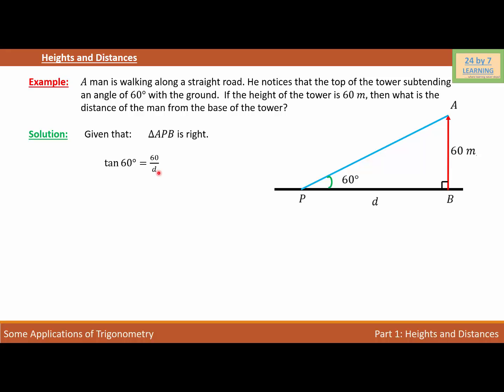Let's do the cross multiplication. I want to take D on the other side and bring tangent 60 under 60, so D equals 60 over tangent 60.